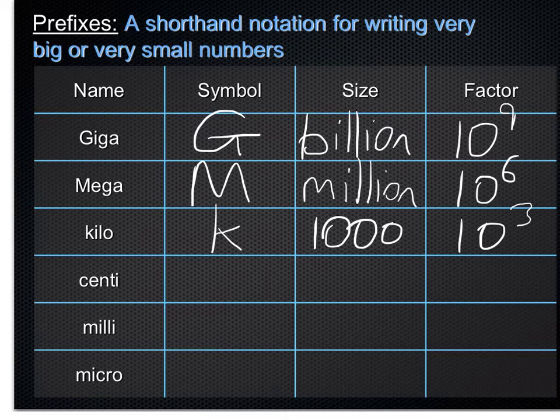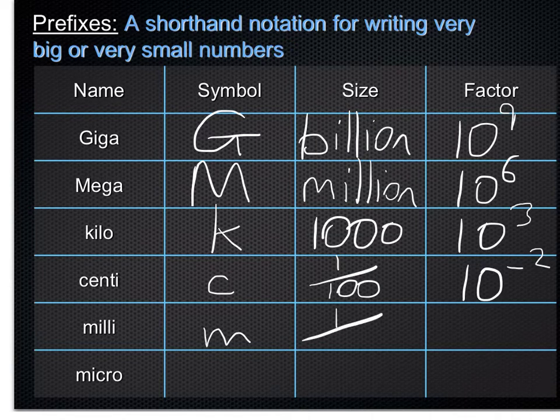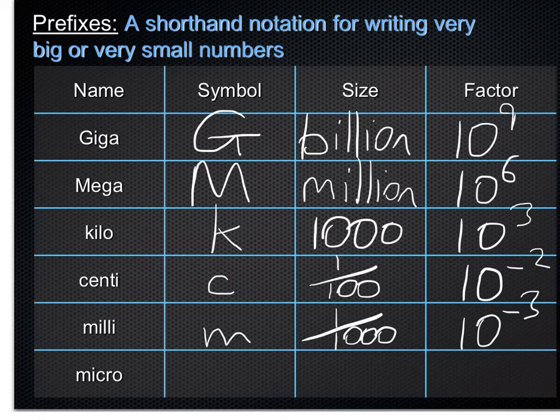Centi, you're familiar with, from centimeters. Small c for that. And the size of a centimeter is 1 hundredth, which we can write like so, or as a factor, 10 to the power of minus 2. A milli, small m, 1 thousandth of something. For example, a millimeter. And that's 10 to the power of 3.